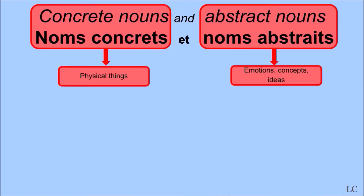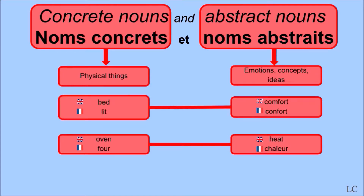The next category we're going to talk about is concrete nouns, nom concret, and abstract nouns, nom abstrait. While concrete nouns refer to physical things that you can physically touch, abstract nouns refer to emotions, concepts and ideas. For example, lit and four are concrete nouns, while confort and chaleur are abstract nouns.